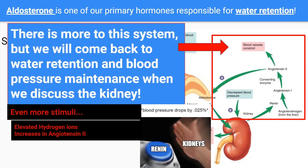Now technically there's much more to the story, because the kidneys play a pretty important role in aldosterone release as well. We will come back to this system later, but for now let's just focus on the fact that when the body needs to increase blood pressure, it can do that by increasing blood volume — meaning adding more water to the blood. To begin this system, the kidney will need to release a hormone called renin that sets off a chemical cascade of reactions, eventually resulting in aldosterone being released from the adrenal cortex to increase water retention. This process is super cool, but we'll just have to wait until we get to the kidney to continue the conversation.